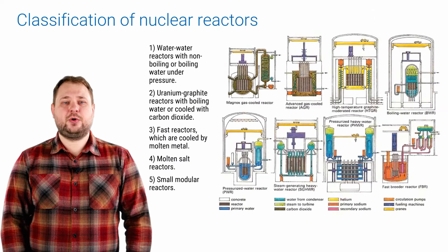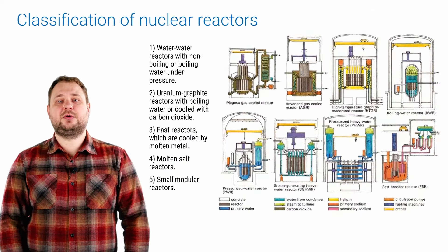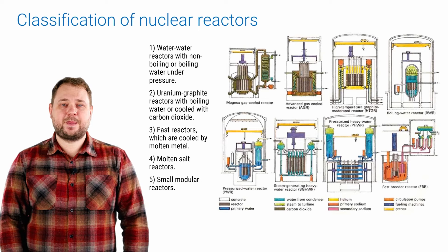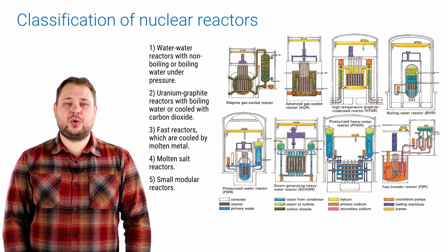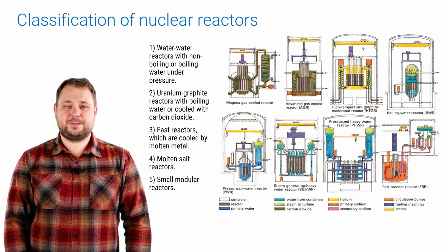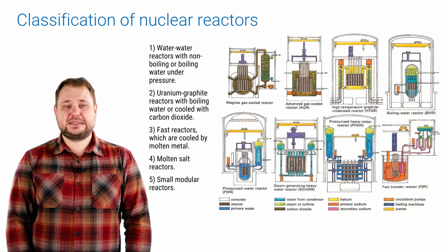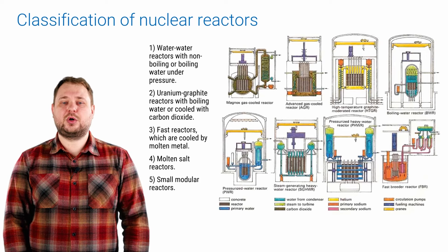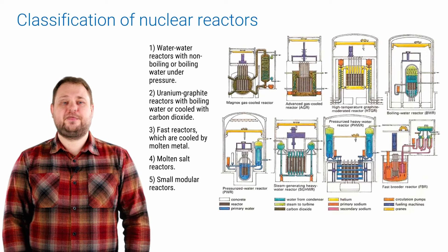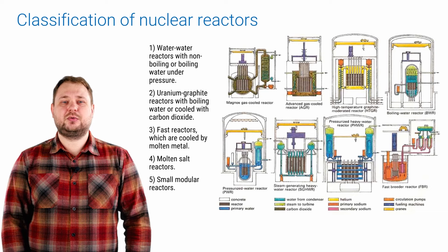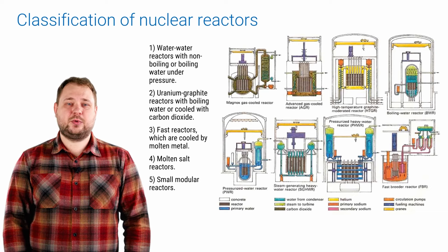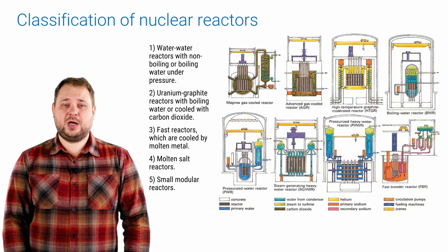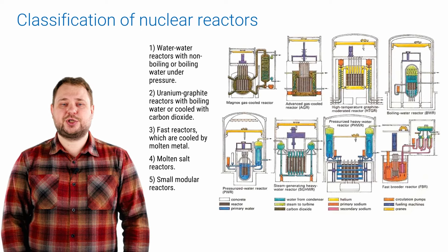In nuclear energy, the following are most often used to produce electricity: water-water reactors with non-boiling or boiling water under pressure, uranium-graphite reactors with boiling water or cooled with carbon dioxide, fast reactors which are cooled by molten metal, molten-salt reactors and small modular reactors. Now let's talk a little more about each type of reactor.